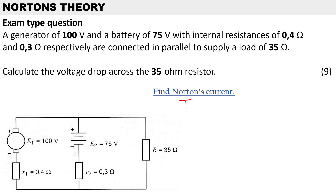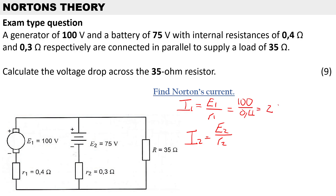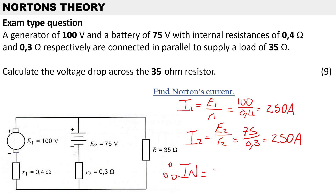I1 is equal to E1 over the internal resistance R1, and I2 is equal to the second EMF divided by the second internal resistance. The first EMF is 100 volts divided by 0.4 ohms, giving us 250 amps. The second EMF is 75 volts divided by 0.3 ohms, also giving us 250 amps. Therefore Norton's current IN equals 250 plus 250, which gives us 500 amps.